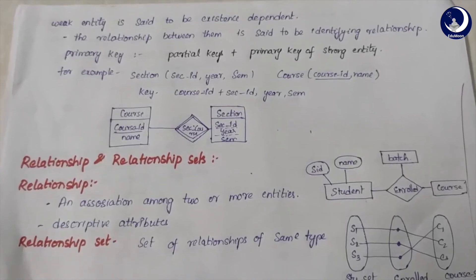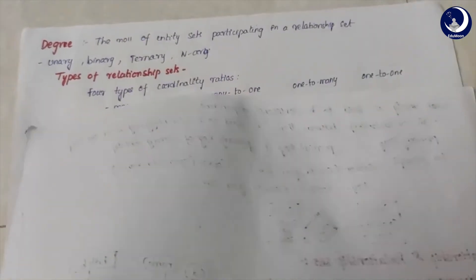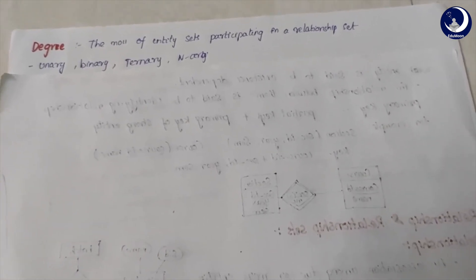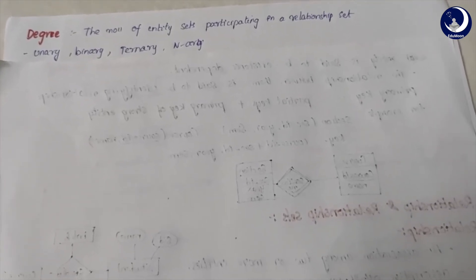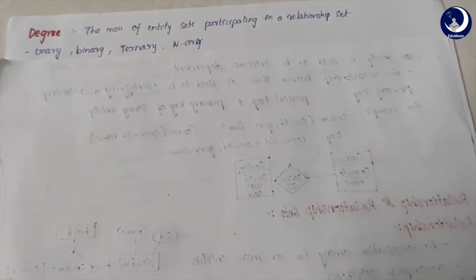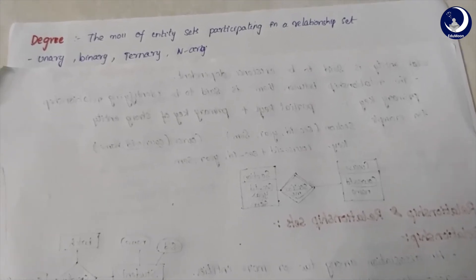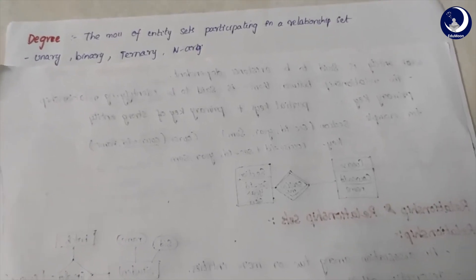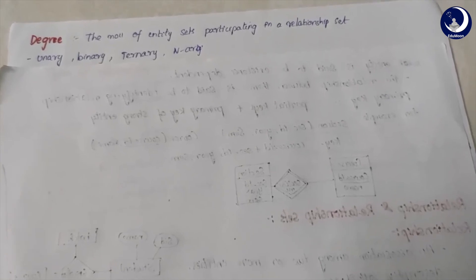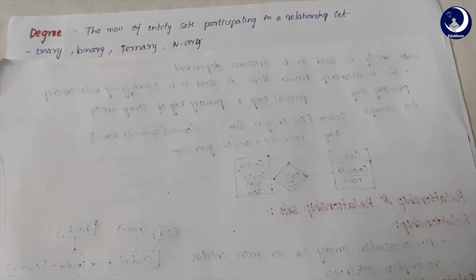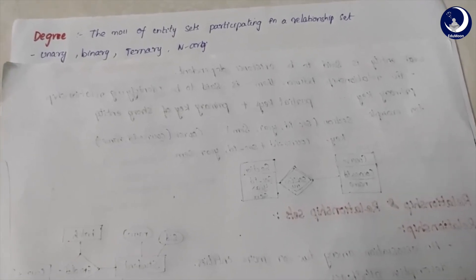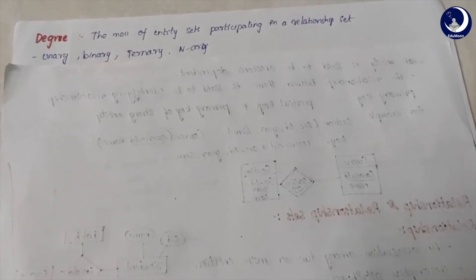The degree of a relationship is the number of entity sets participating in it. Based on degree, relationships are classified into four types: unary, binary, ternary and N-ary. In a binary relationship, two entities are associated with a single relationship — for example, students enrolled in a course, or employees working in a company. In a ternary relationship, three entities participate — for example, an employee working in a company at a certain location, such as TCS in Hyderabad or TCS in Bangalore, giving three entities: employee, company and location. In an N-ary relationship, N entities are associated with a single relationship.